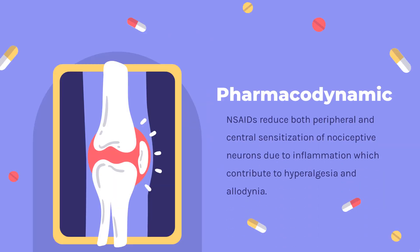Pharmacodynamics: NSAIDs like nabumetone are well-established as analgesics. NSAIDs reduce both peripheral and central sensitization of nociceptive neurons due to inflammation, which contributes to hyperalgesia and allodynia. This sensitization occurs through reducing the action potential threshold in peripheral neurons, reducing the intensity of painful stimuli needed to produce a painful sensation.